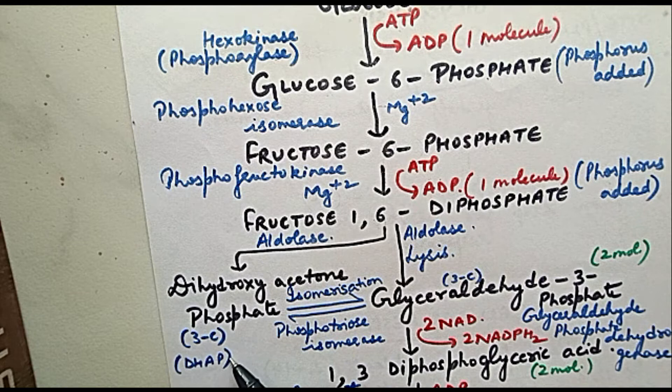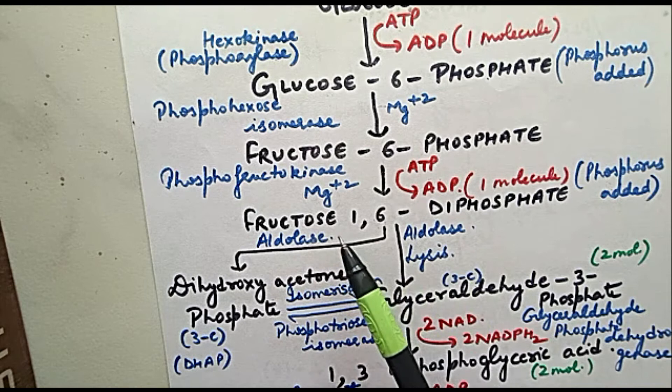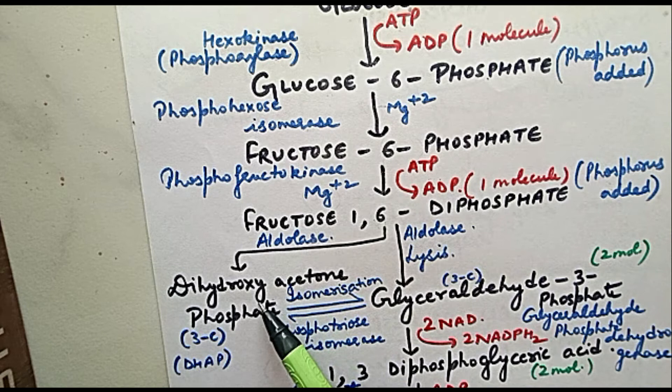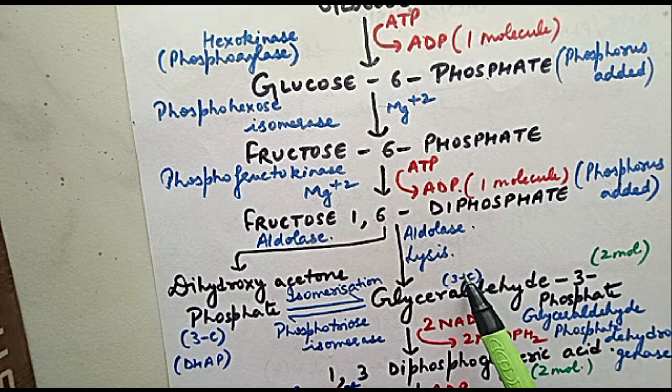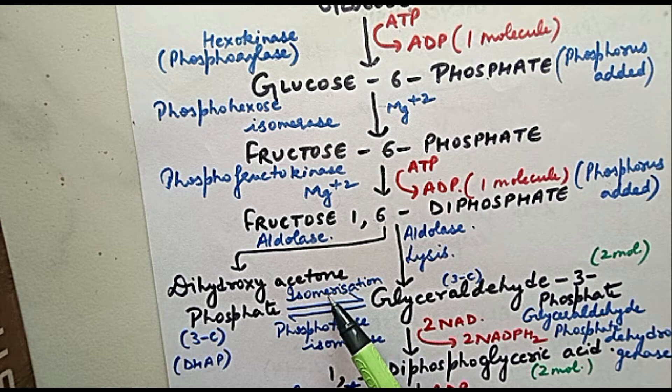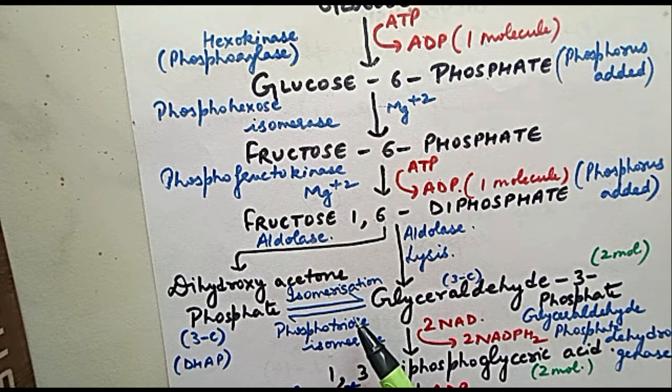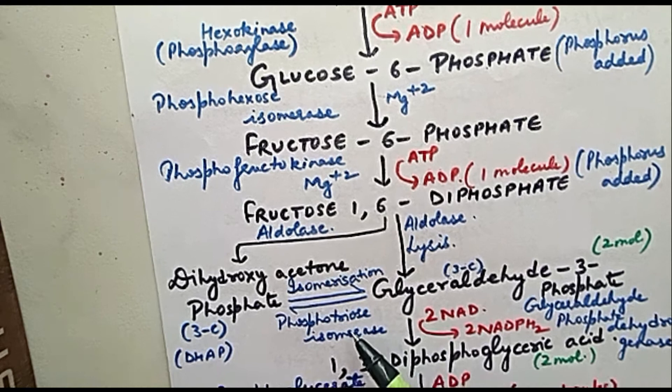It is a 3-carbon compound DHAP. The enzyme involved here is aldolase. Fructose-1,6-diphosphate converts to dihydroxyacetone phosphate and glyceraldehyde-3-phosphate. This is also a 3-carbon compound. These are inter-converted molecules. The enzyme involved here is phosphotriose isomerase.